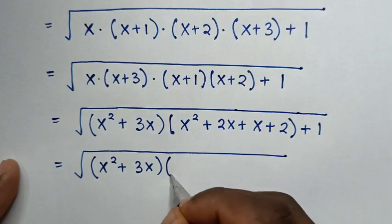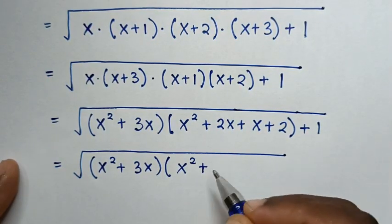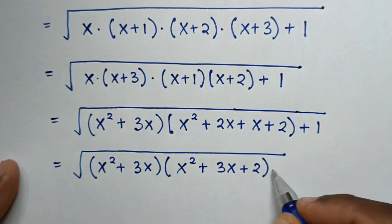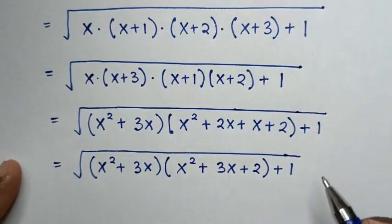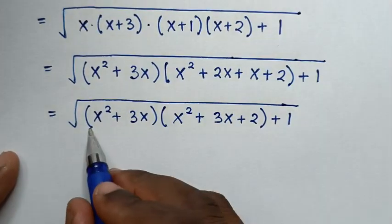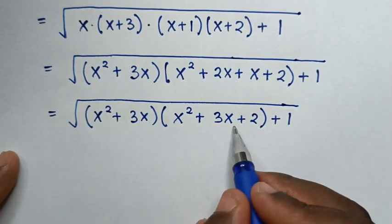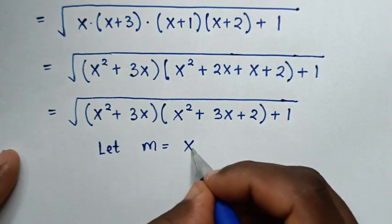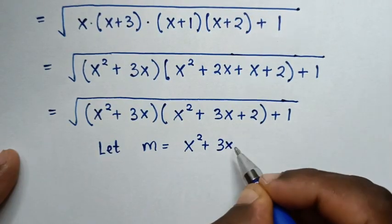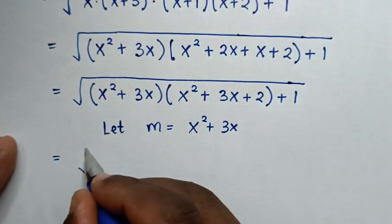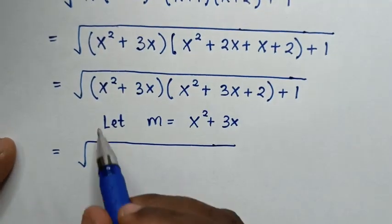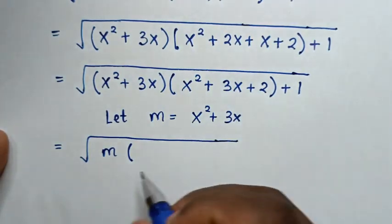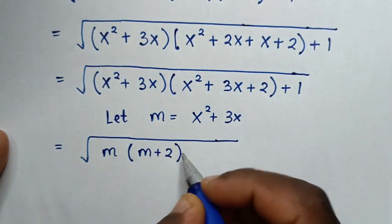Expanding, we get x²+3x from the first pair and x²+3x again from the second pair. Since x²+3x is common, we let m equal to x²+3x.